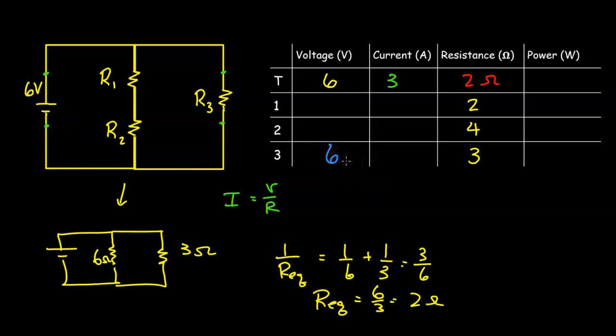The next step is to find the current through R3 by using our Ohm's law, so V over R, so 6 divided by 3, and we get 2 amperes. The next step is to think about current here. We know that the current through the battery is 3 amperes, and then they split, so some of it is going to go through R3, and some of it will go through R1 and R2. We know that 2 amperes go through R3, so that means 1 ampere is going through R1 and R2.